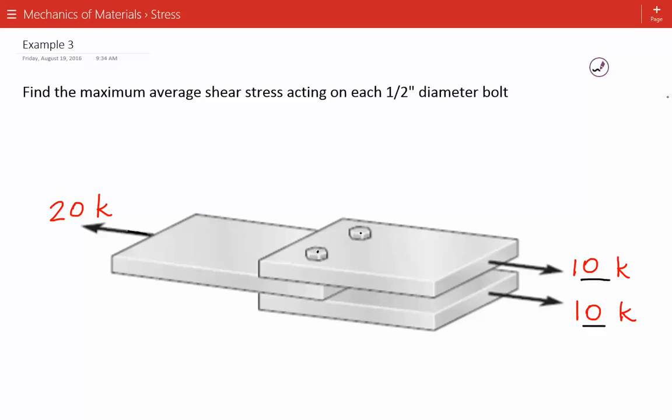We need to find the maximum average shear stress acting on each of the bolts, and we have two bolts. So the first thing we're going to do is find the shear force acting on each bolt.